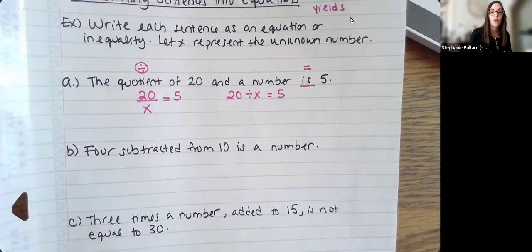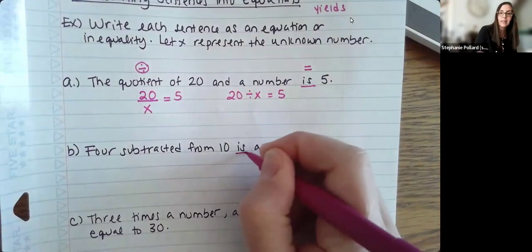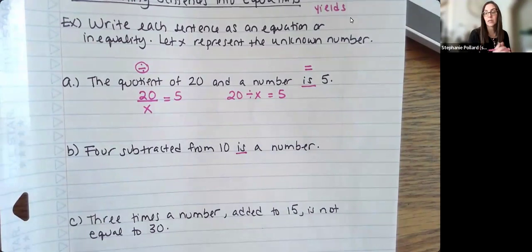Next, I have 4 subtracted from 10 is a number. Again, there's that keyword is here. And again, it's the one you see the most for equal signs. So that's going to be our equals.